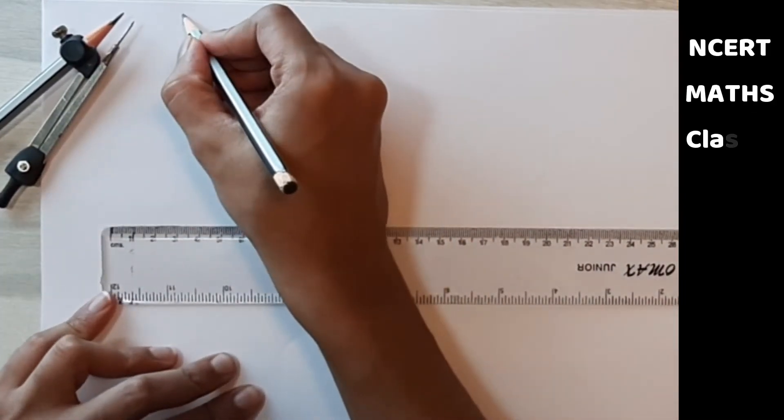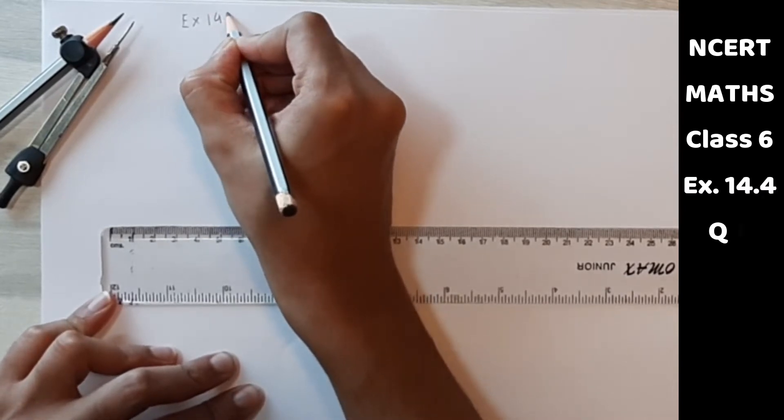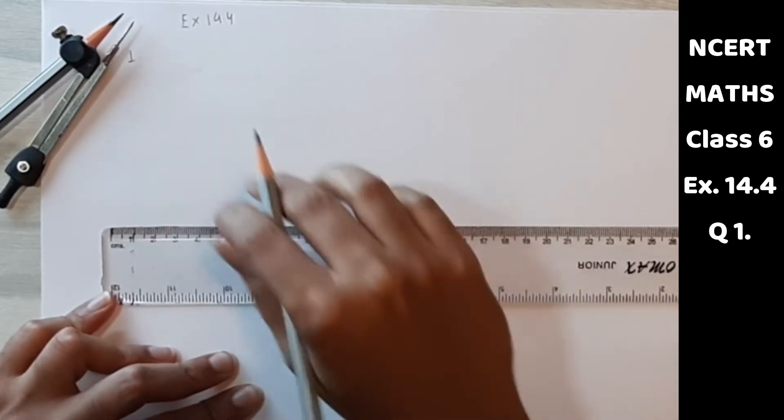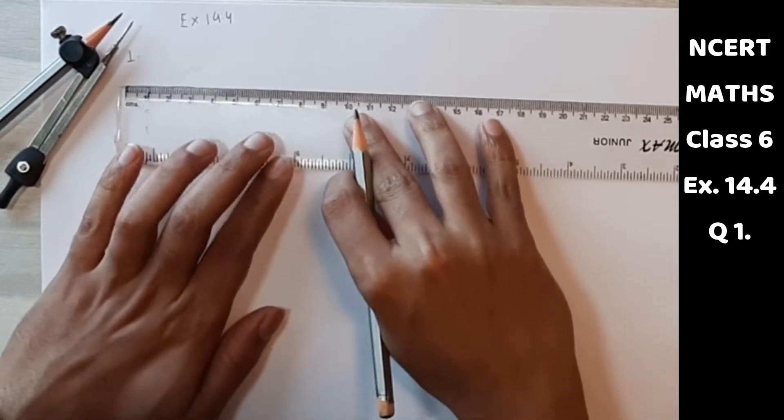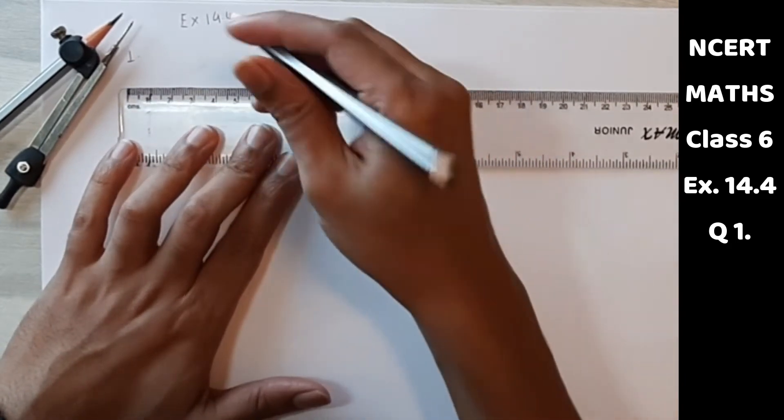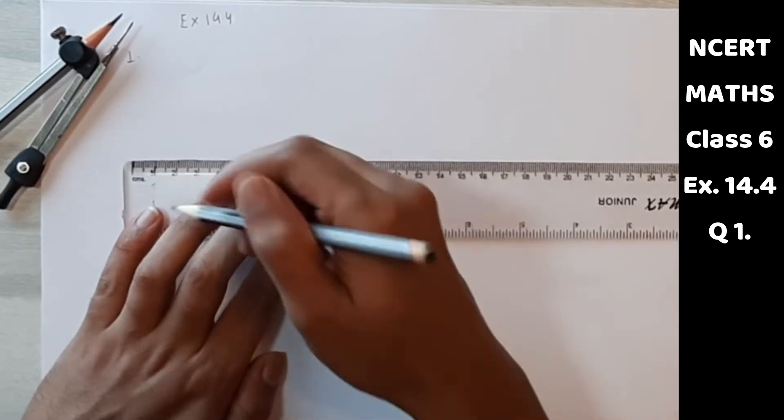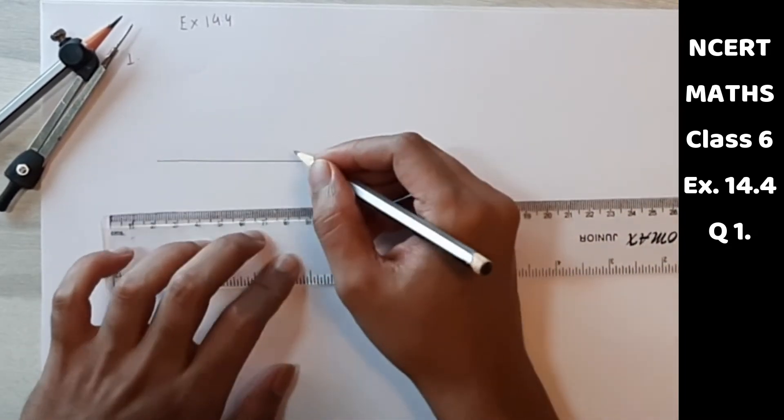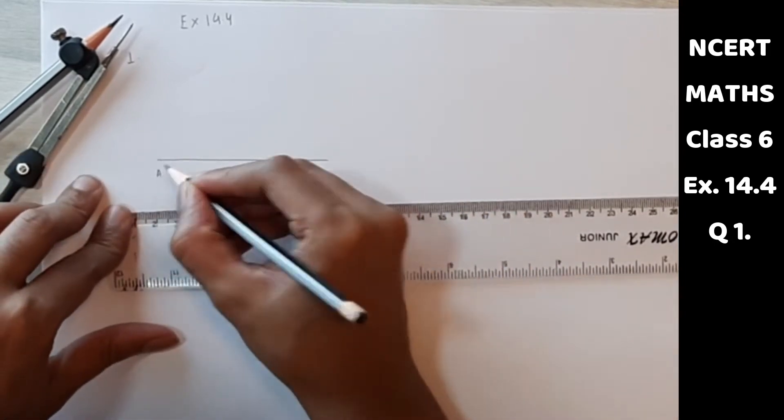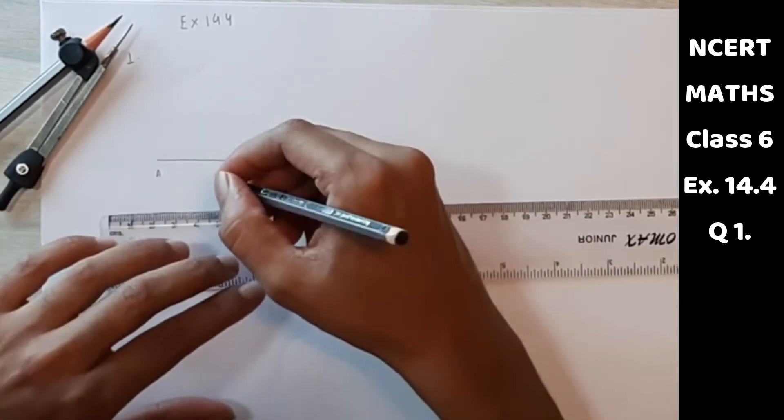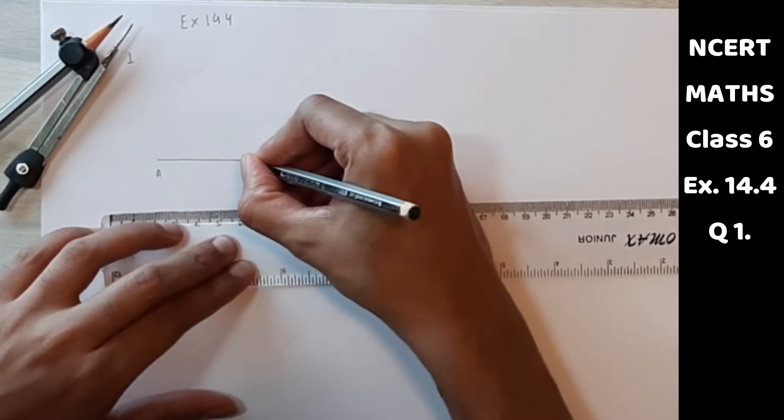This is exercise 14.4, first question. So this is the line segment AB. Now we have to mark any point. So let's say this.